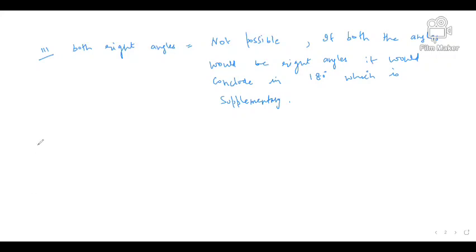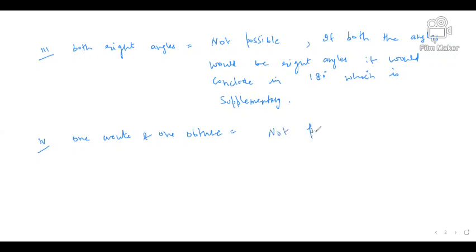Now the fourth part: if both angles are complementary to each other, is it possible that one angle is acute and one is obtuse? There is no possibility — not possible. So those were all four sub-parts of question one. If any type of doubt is there, feel free to ask by commenting in the comment box.